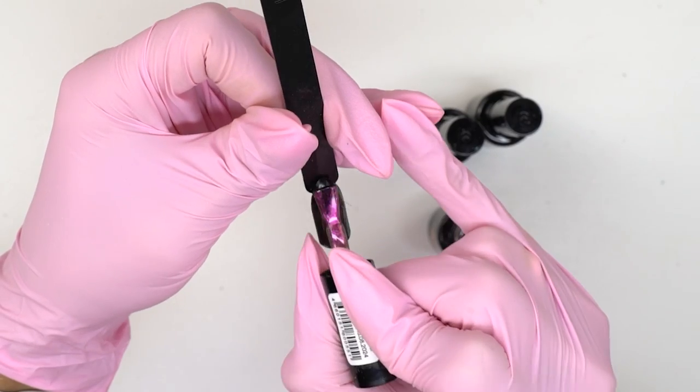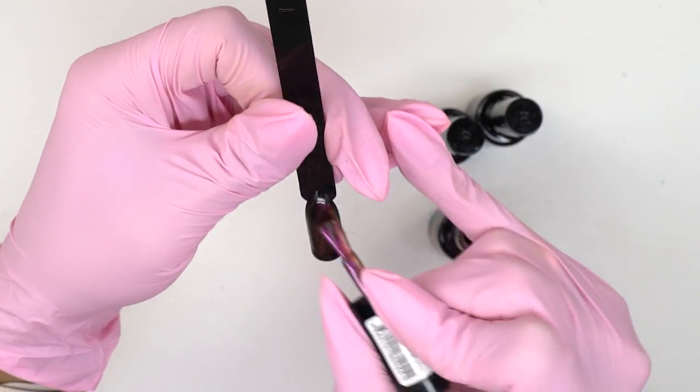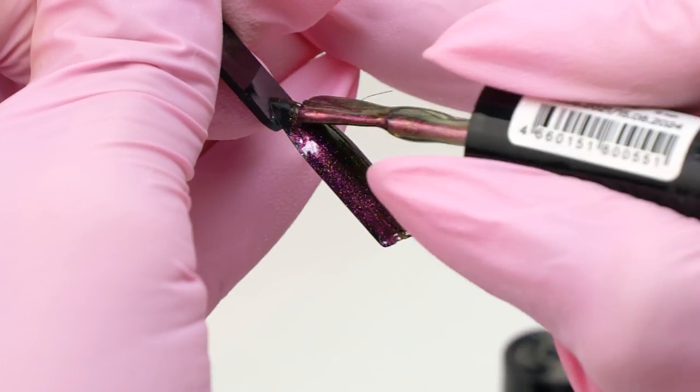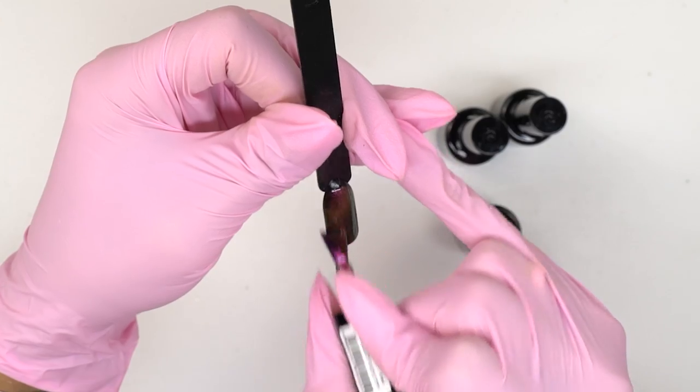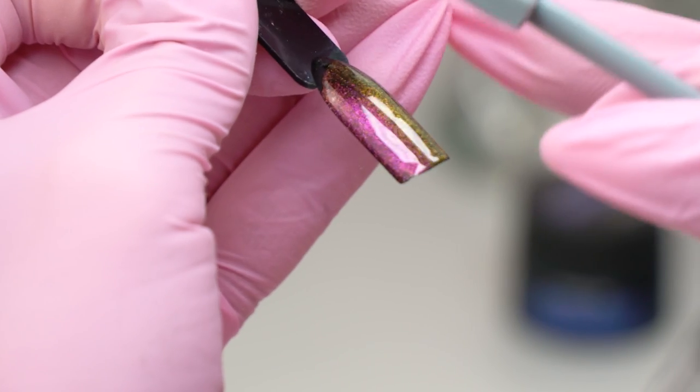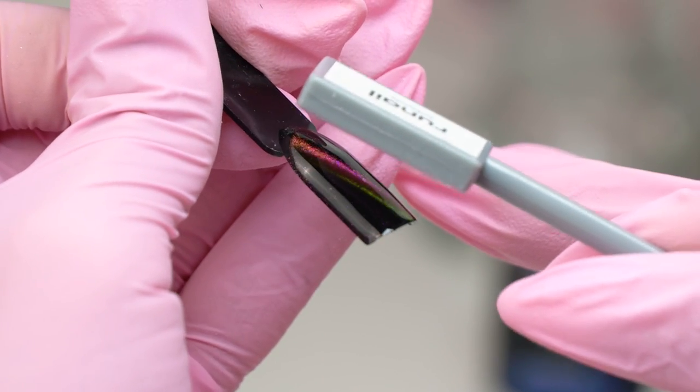This one is the most popular. It's chameleonic, so at different angles it looks pink or orange. We can form a vertical cat-eye line with a magnet.